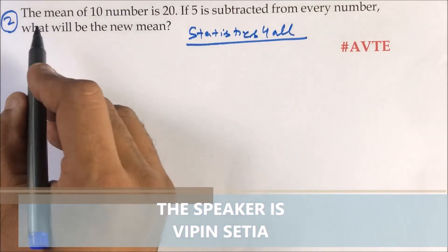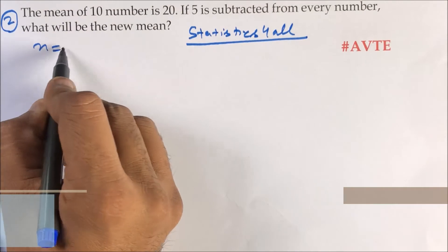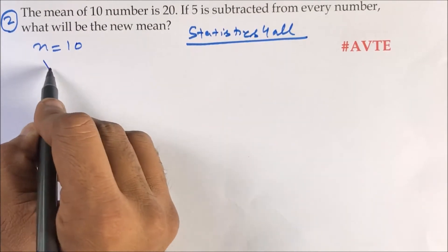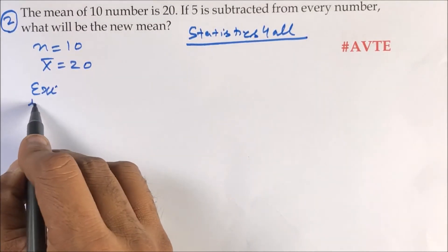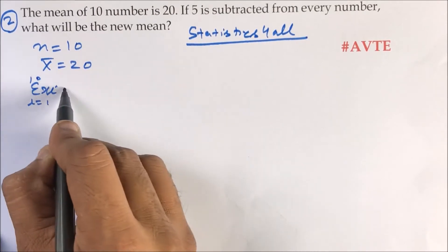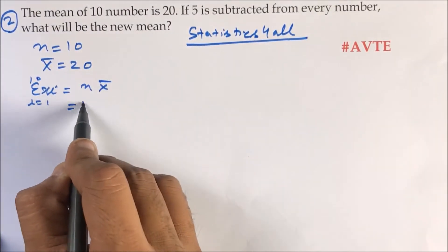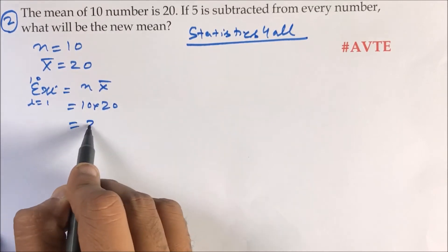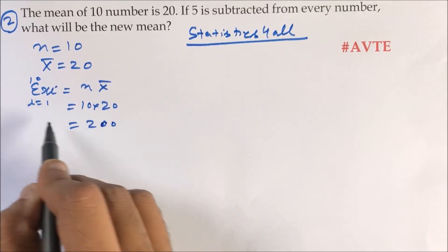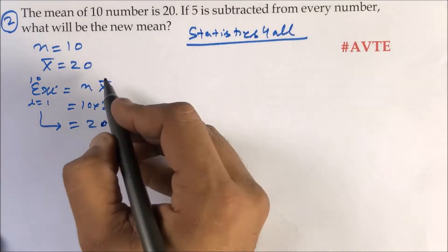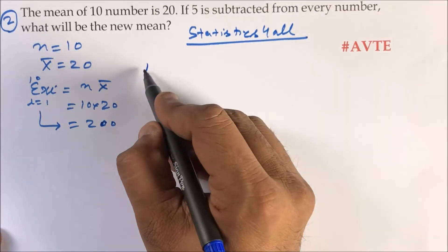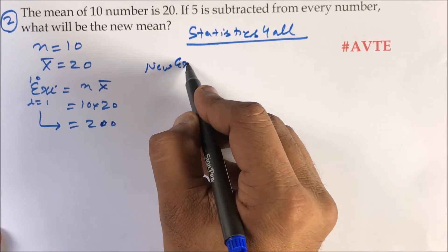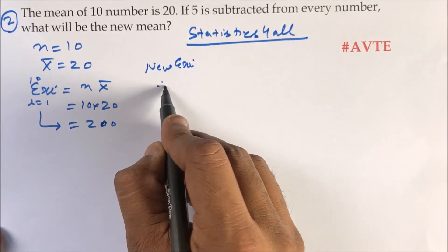The question is: the mean of 10 numbers is 20, that means sigma xi of 10 numbers is n times mean, that is 200. The first formula of sigma xi is n times mean, and the second formula of sigma xi is the sum of all the observations. Now, what is your new sigma xi?